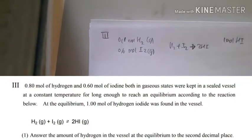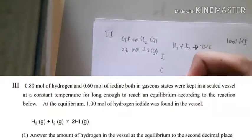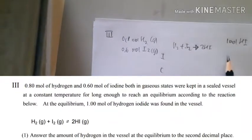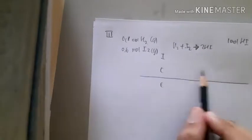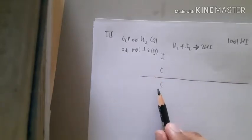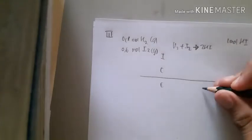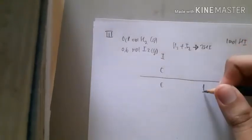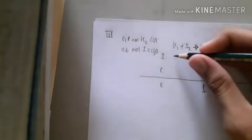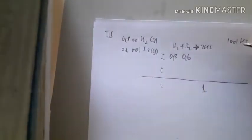Let's use the ICE table, which stands for Initial, Change, and Equilibrium states. It's given that hydrogen iodide has 1 mole at equilibrium, and initially we have 0.8 mole of H2 and 0.6 mole of I2. We need to calculate hydrogen at equilibrium.